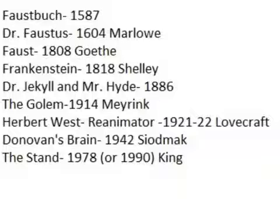Donovan's Brain, 1942, by Siodmak. The guy takes the brain out of the body and puts it in a vat of chemicals — the brain belonging to Donovan. Then starts communicating with it telepathically, and the brain starts taking over the scientist's mind and making him do stuff, like trying to run over a little girl, until he breaks the vat of chemicals.